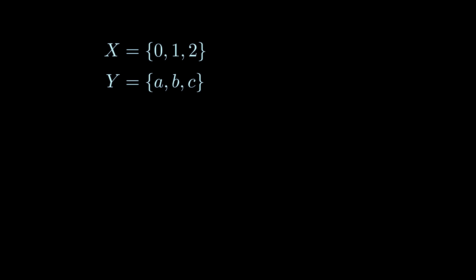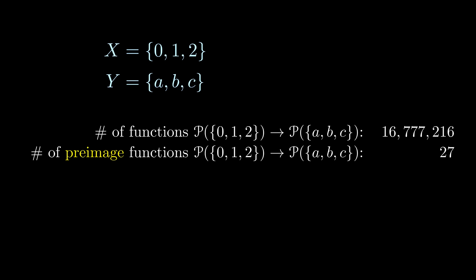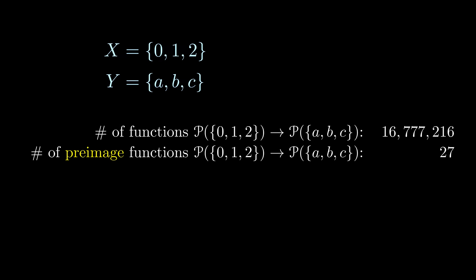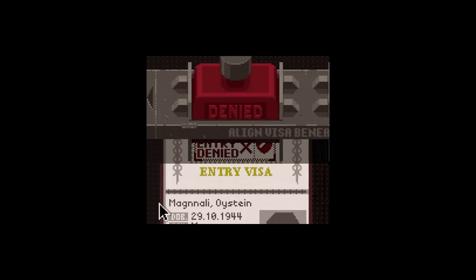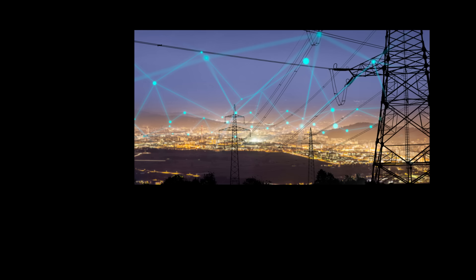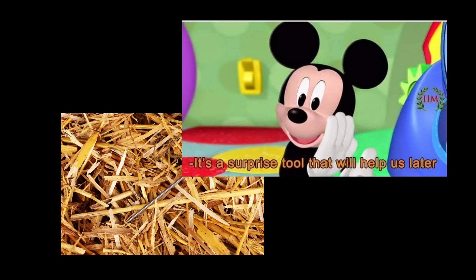Suppose for instance that X and Y both have three elements each. Then there are over 16 million maps from the power set of X to the power set of Y, but only 27 of them are preimage functions. Trying to filter through all functions between power sets to identify which of them are preimage functions forces us to look more closely at the structure of power sets so that we can understand how these structures are preserved by preimage functions. By figuring out which functions are preimage functions, we invariably bring ourselves that much closer to understanding what a coset should be.